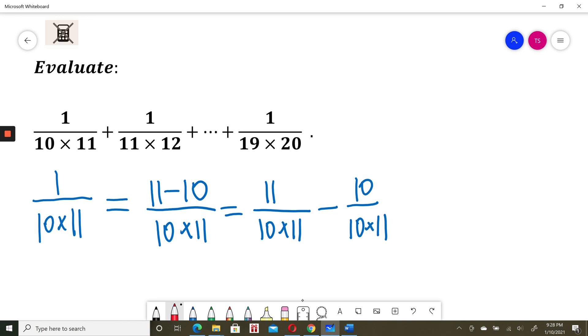Now I can simplify 11's here and 10's here. So this is equal, I can write it as 1 divided by 10 minus 1 divided by 11.